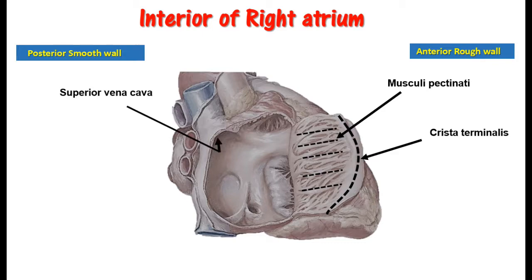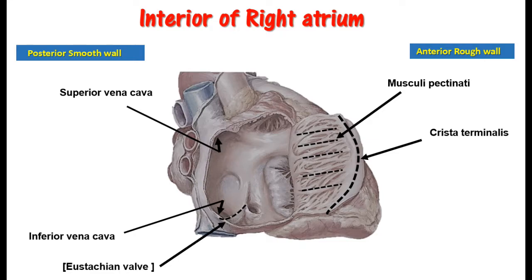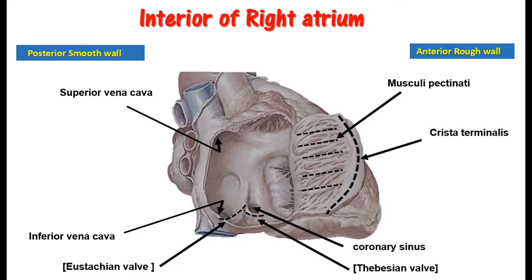On the posterior wall we have the opening for the superior vena cava at the upper end. At the lower end we have the inferior vena cava opening, and this is guarded by the Eustachian valve. Another opening is the coronary sinus, between the inferior vena cava and the right atrioventricular orifice. It is guarded by the Thebesian valve.